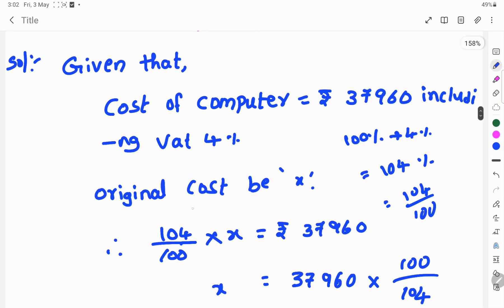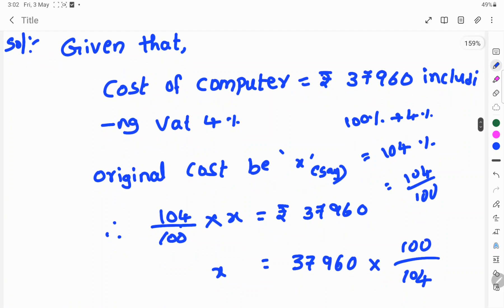So, original cost be x, we say x. Therefore, 104 by 100 into x is equal to 37,960 rupees and x is equal to,